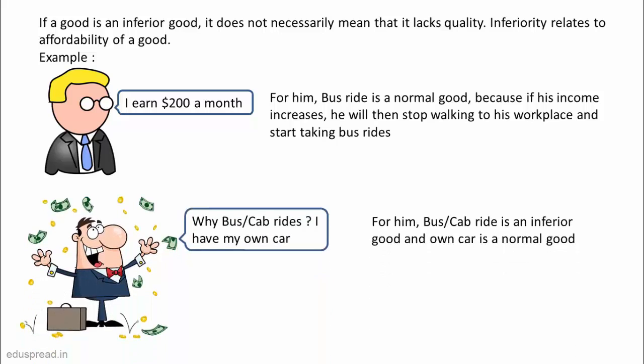And if he generates more money, he will stop using cabs and buy his own car — so cab ride becomes an inferior good and car becomes a normal good. You can see how a consumer who likes a good when his income was low may not prefer the same good when his income is high. Note that no good is inferior at all times and for all people. For a consumer with high income, cab ride is inferior, but for a consumer with low income, cab ride is a normal good.